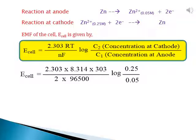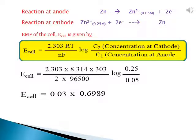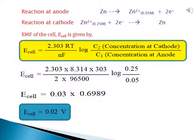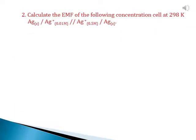By substituting the values: E_cell = (2.303 × 8.314 × 303) / (2 × 96500) × log(0.25 / 0.05). The number of electrons involved in the oxidation and reduction reactions is 2, therefore N = 2. Simplifying, E_cell = 0.03 × 0.6989, giving a final answer of E_cell = 0.02 volt.